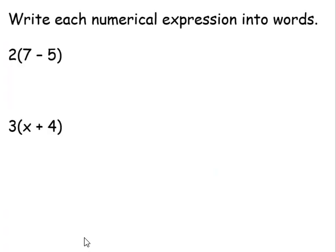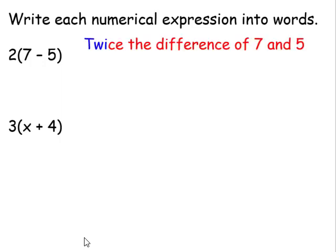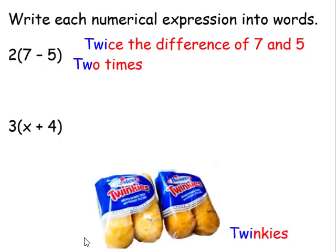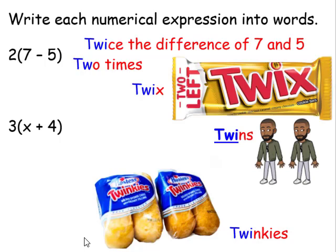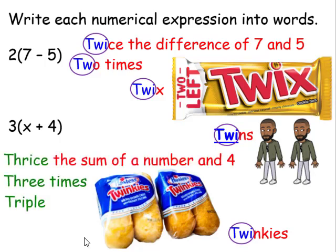Now write each numerical expression into words. We have 'twice the difference of seven and five.' You could also use 'two times' instead of 'twice.' Notice that both 'two' and 'twice' share the letters T-W — you also see this in Twinkies, Twix, and Twins. Anytime we have that 'tw-' sound, most likely we're multiplying by two. Similarly, 'thrice the sum of a number and four' relates to three, just as 'triple' does.